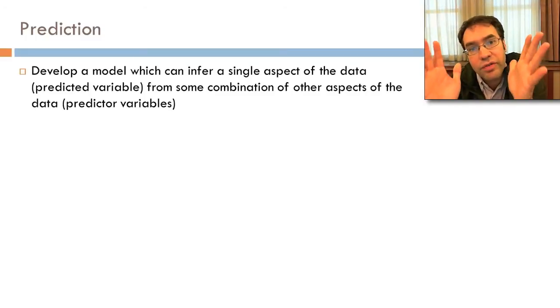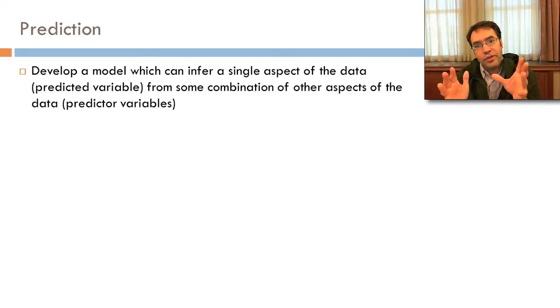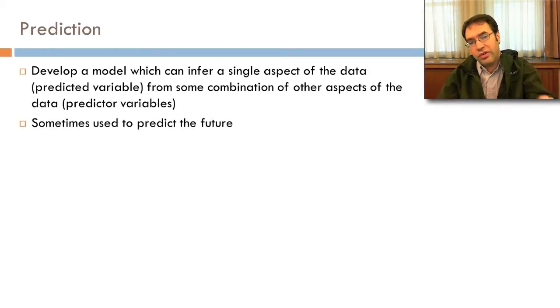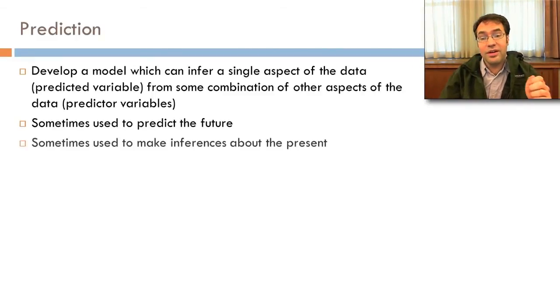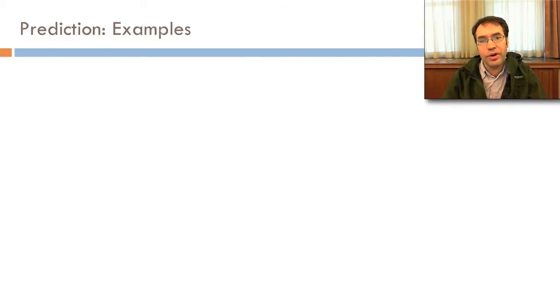The goal of prediction modeling is to develop a model which can infer a single aspect of the data, the predicted variable, from some combination of other aspects of the data, the predictor variables. Sometimes it's used to predict the future. It's hard to make predictions, especially about the future, as Niels Bohr once said. And sometimes it's used to make inferences about the present. So let's talk about some examples of prediction.